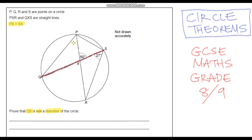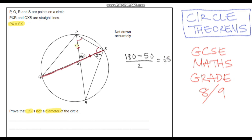First, I can see the two dashes indicating these two angles are equal. We know one angle in the triangle is 50 degrees, so we can calculate the other two. Using 180 minus 50, then dividing by 2 because the two angles are equal, we get 130 divided by 2, which gives us 65 degrees each.